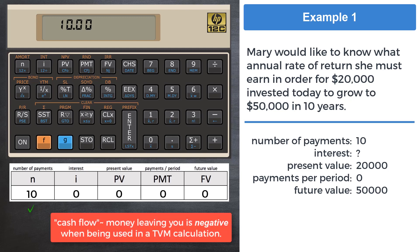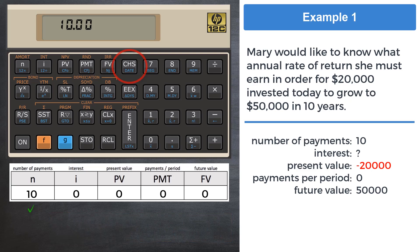In TVM calculations, there is a flow of the direction of money. Since this money is leaving Mary to be invested, it is required in this calculation that the number be entered as a negative number. To make this number negative, press the CHS key in the middle top row.